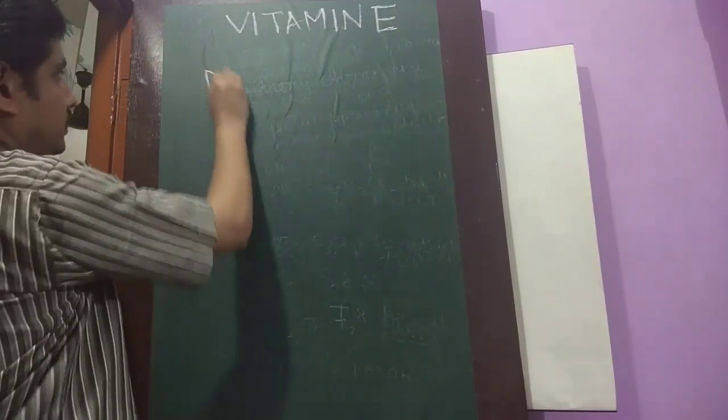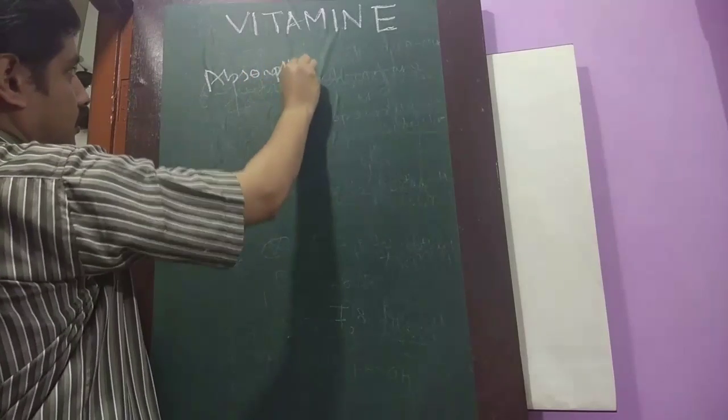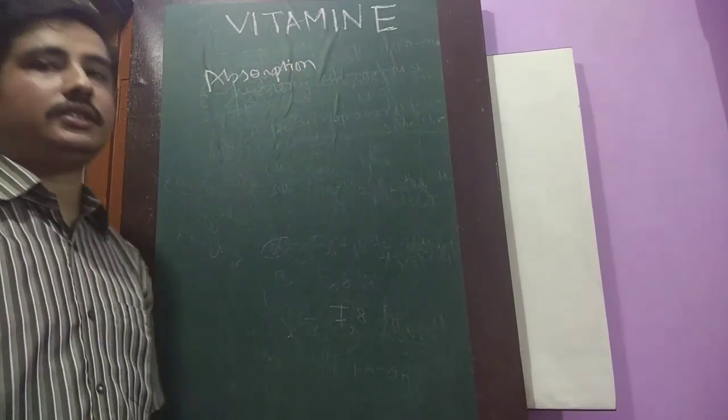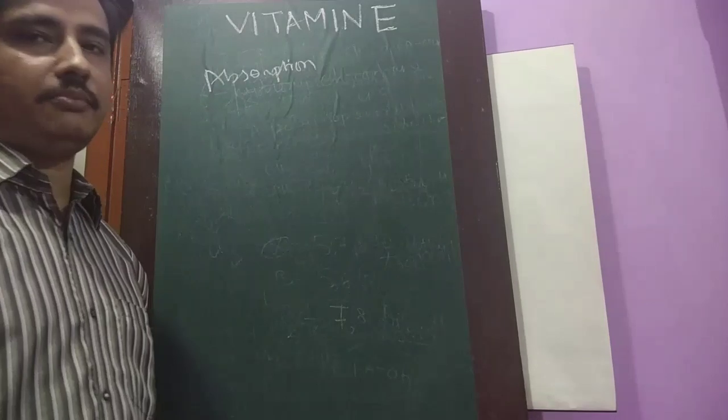Now the absorption of vitamin E. As vitamin E is a fat-soluble vitamin, so its absorption is along with fats and which is helped by bile salts.